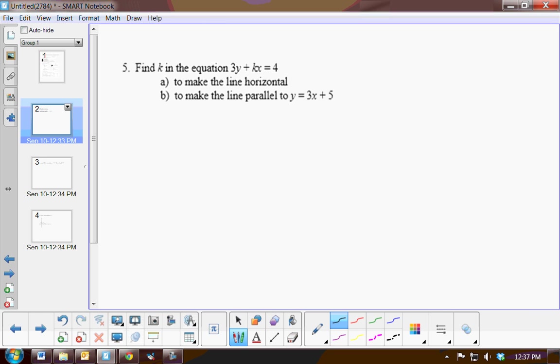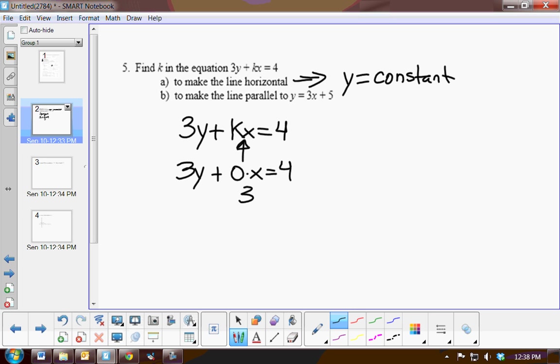Okay, problem five. You are given an equation and you want to first make the line horizontal. Well, we know all horizontal lines are of the form y equals a constant. So for this particular problem, I want it to be y equals a constant. In other words, this term I need to get rid of. So to get rid of it, let k be zero. Because if you have 3y plus 0 times x equals 4, that will be 0. So I have 3y equals 4, so y equals 4 thirds. So for part A, let k be 0.